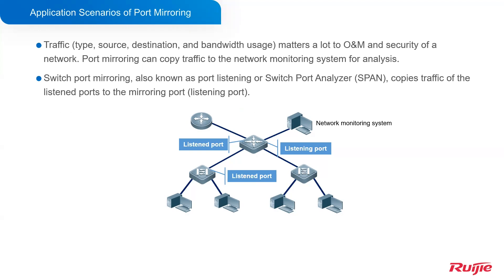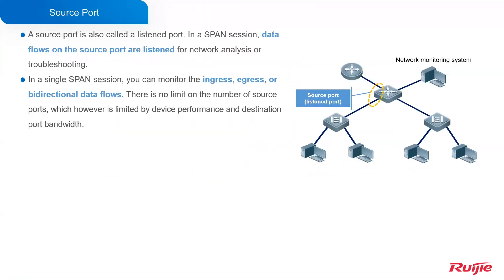So in the network, one of the devices could have listened ports or mirroring ports. About SPAN or port mirroring, there is a port called the source port. A source port is also called a listened port. In a SPAN session, data flows on the source port are listened for network analysis or troubleshooting. In a single SPAN session, you can monitor the ingress, egress, or bi-directional data flows. There is no limit on the number of source ports, which however is limited by device performance and the destination port bandwidth.